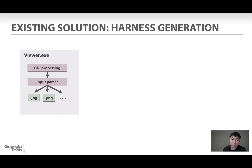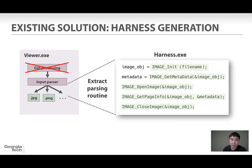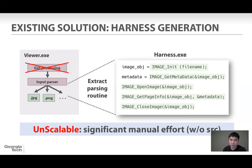There are several existing solutions to overcome these problems. The first solution is generating a harness. We have the binary and researchers can analyze the program, and experts can skip the GUI by extracting the core routine of the program. In this example, since we want to test the input parser, we can extract the parsing routine and make a much smaller program. This harness will have only file opening, file read, and file close. But making the harness is unscalable because it requires significant manual effort if we don't have source code.